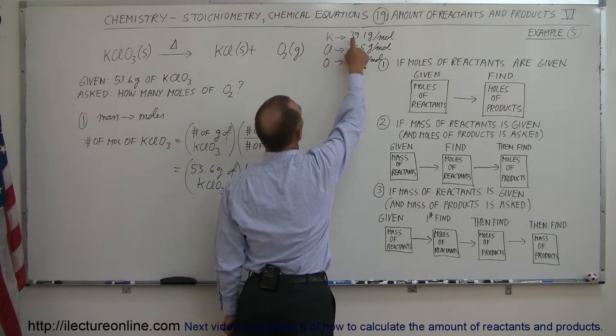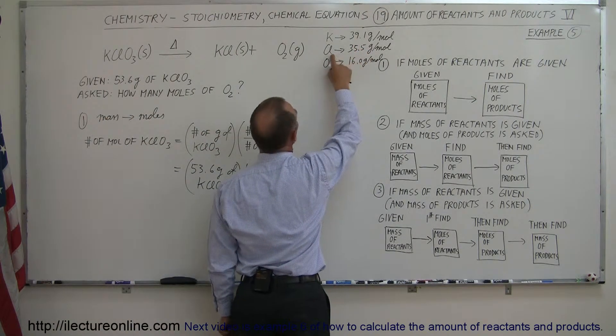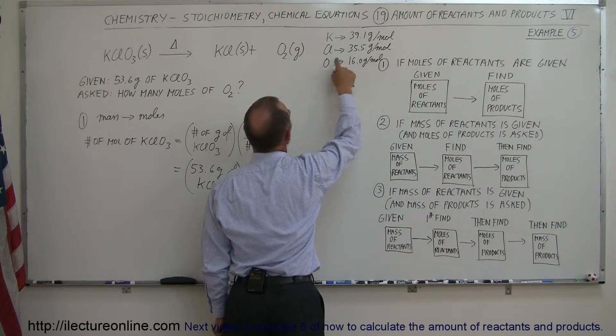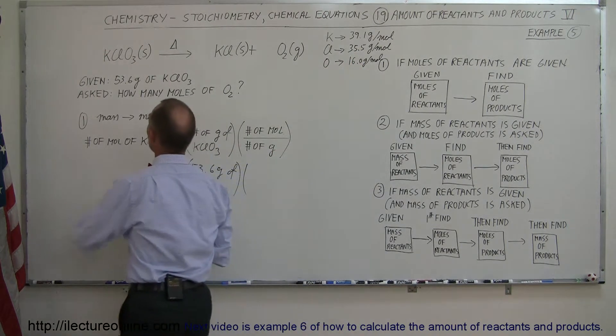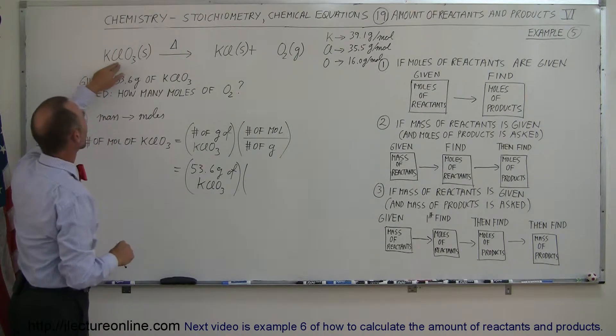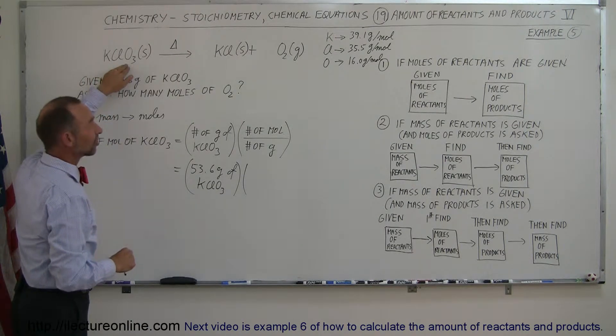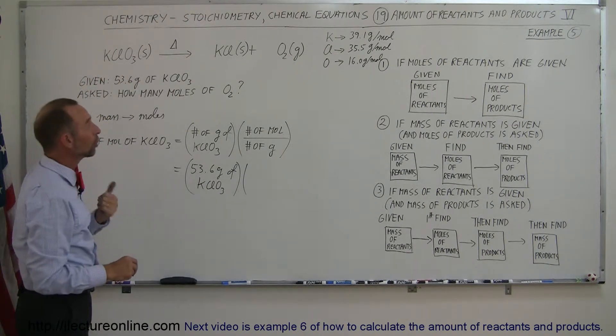Well, here we have potassium is 39.1 grams per mole, chlorine is 35.5 grams per mole, and oxygen is 16.0 grams per mole. We have one potassium atom, one chlorine atom, and three oxygen atoms. So to find the total molar mass of that,